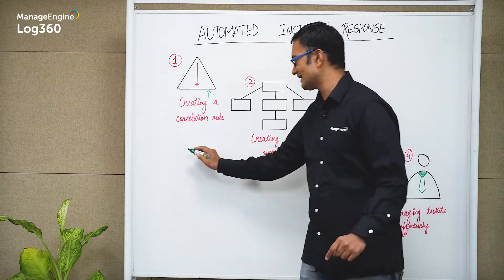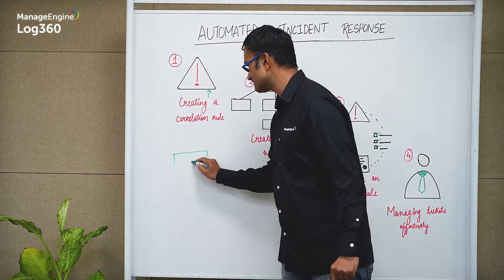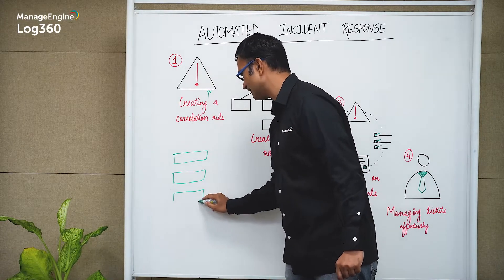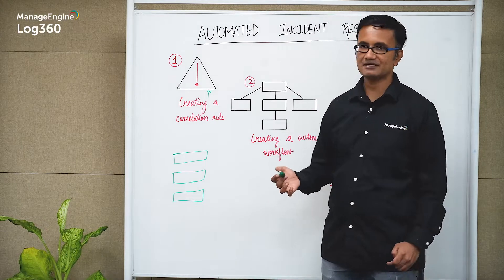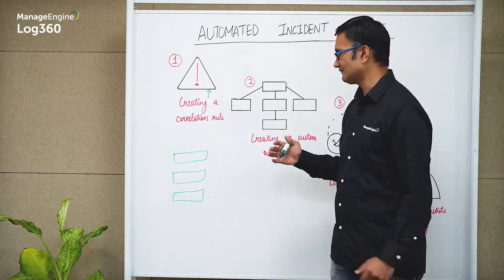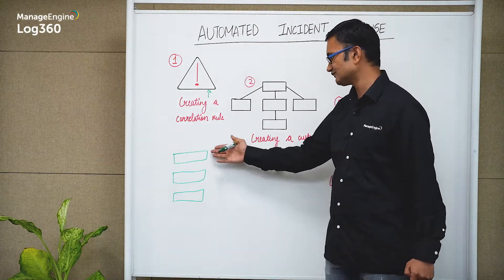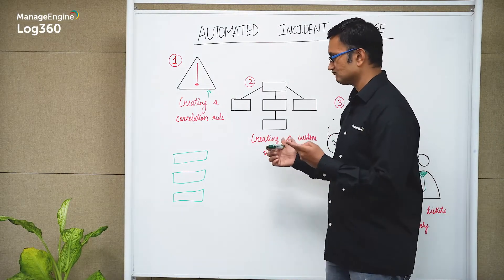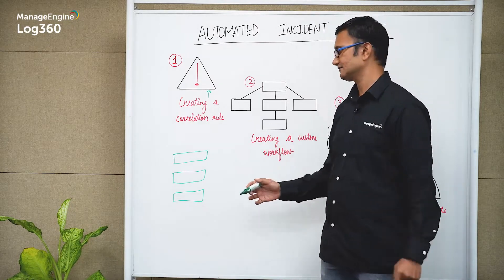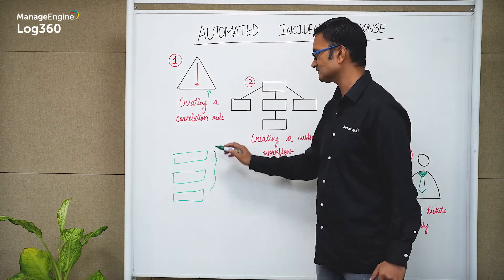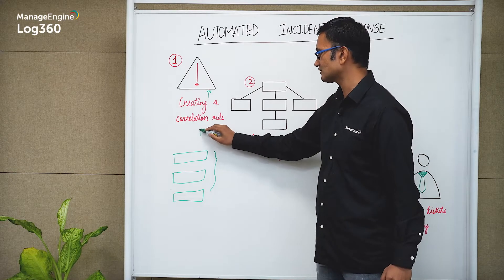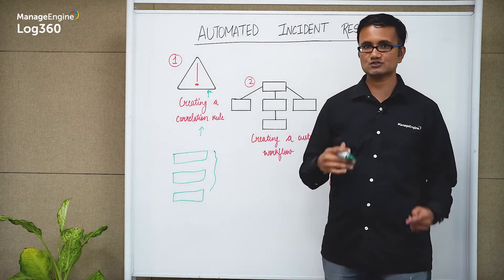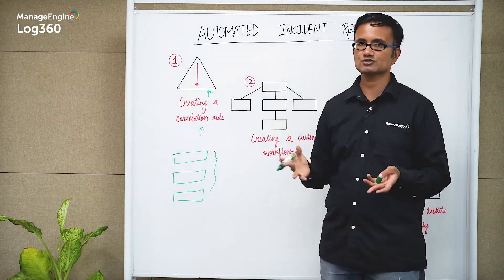Let's say there are three discrete events that happen. We can take the example of a failed password change happening in quick succession. Whenever three of those events are seen, that is going to trigger a correlation rule, which in turn is going to trigger one alert. So three discrete events create one correlation rule, and this correlation rule in turn creates an alert for you, which will be available in your SIEM solution's alerting dashboard.